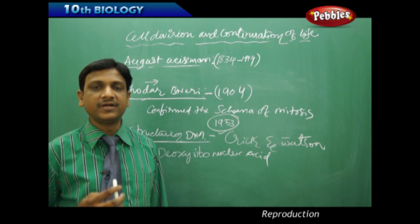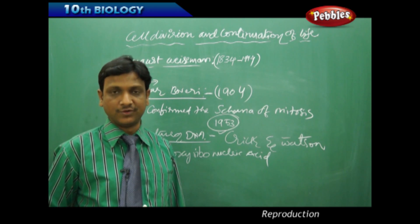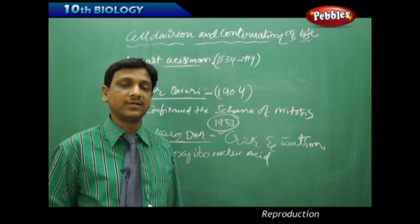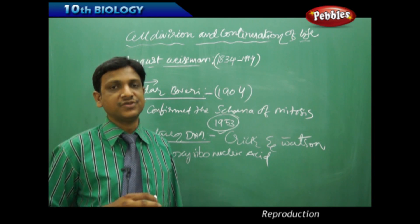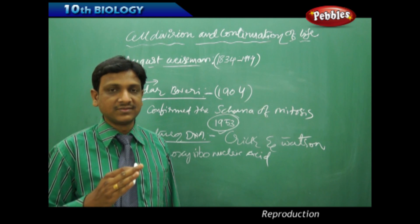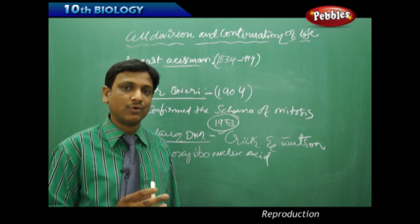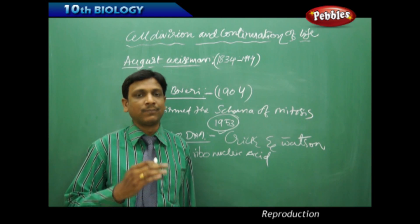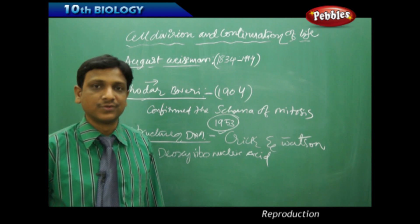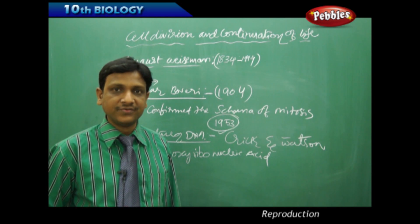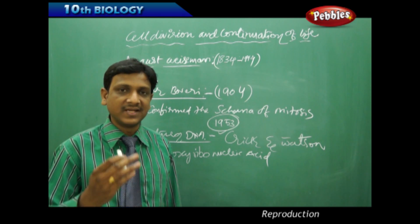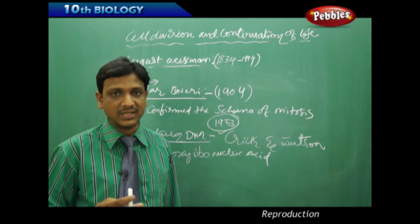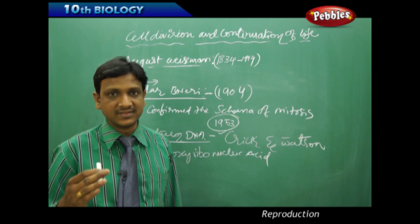Scientists found that mitotic division takes place in various body parts of human beings during growth and development. But in reproductive cells, for the formation of male and female gametes, meiotic division takes place. Meiosis is a special kind of cell division in which the number of chromosomes is reduced to half in the cells produced — haploid cells are produced, meaning cells with only one set of chromosomes. In mitotic division, the new cells formed have the same number of chromosomes — not reduced or doubled. Whereas in meiosis, the number of chromosomes is reduced to half.